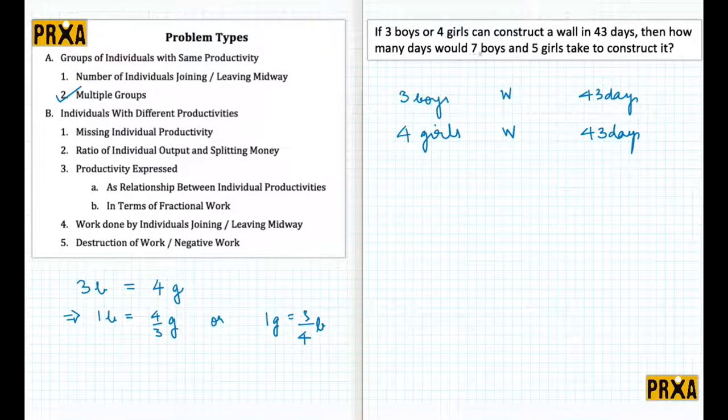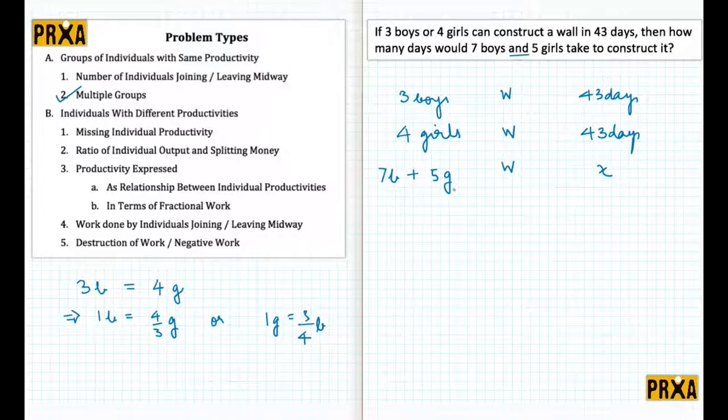But what is the question asked? The question has been asked seven boys and five girls. The question is how much time will seven boys and five girls take to build the wall. So let me use a plus sign: seven boys plus five girls, number of days I don't know.